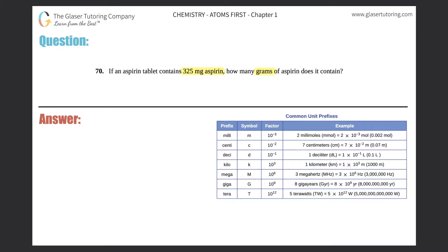So straight conversion, right? They're asking you to convert 325 milligrams of aspirin to grams of aspirin. Do we know a direct conversion between milligrams to grams? Yes, we do. So this one is a one-step question.